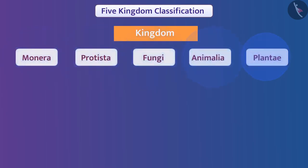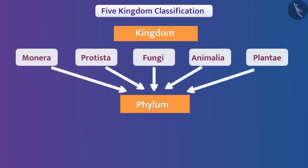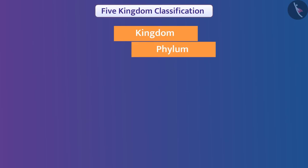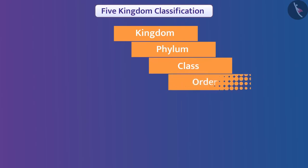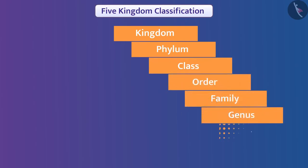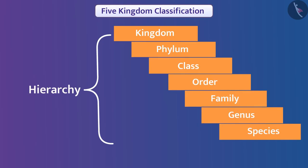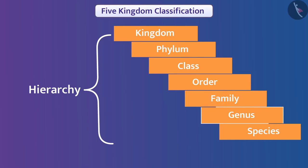That's why each kingdom is again classified into subgroups. On the basis of characteristics, organisms are divided further into smaller groups at different levels, from which a hierarchy is developed. In this hierarchy, kingdoms are at the upper level, and at the lower levels respectively there are phylum, class, order, family, genus, and species at the lowest level.